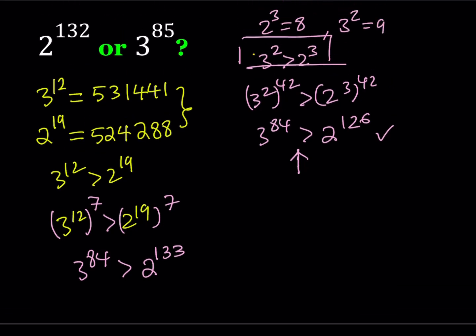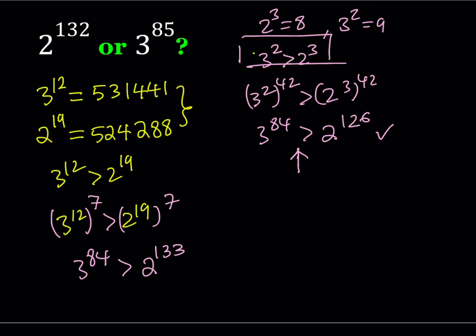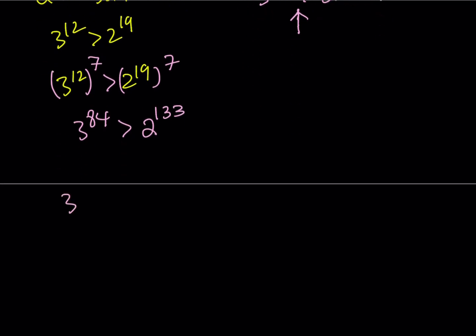Now, this is what I have and remember our original problem is asking us to compare these two numbers and we're pretty close because we know that 3 to the power 85 is greater than 3 to the power 84 and 2 to the power 133 is greater than 2 to the power 132.